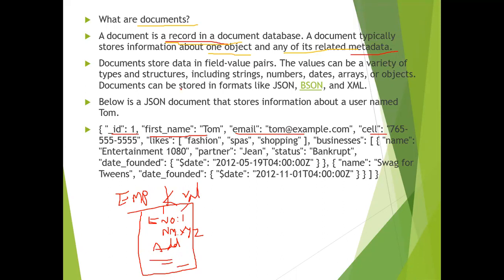The values may be of different types and structures like strings, numbers, and dates. A document can contain a date type, an array type, or even another nested document (business data). These documents can be stored in formats like JSON, BSON, and XML.